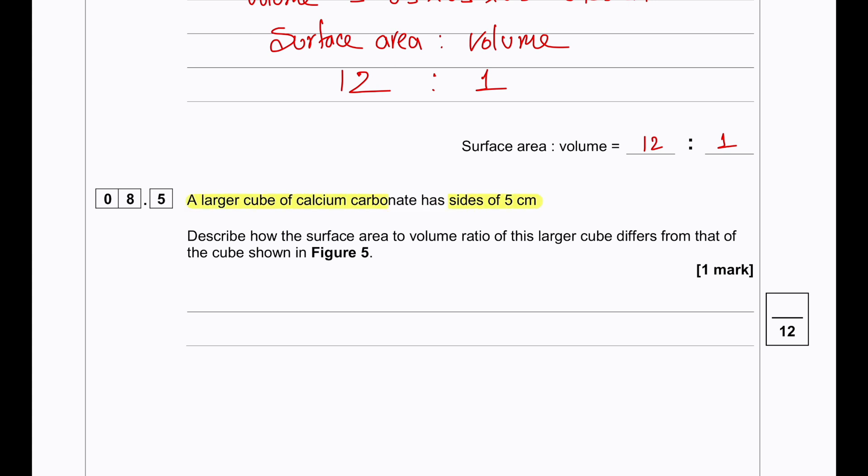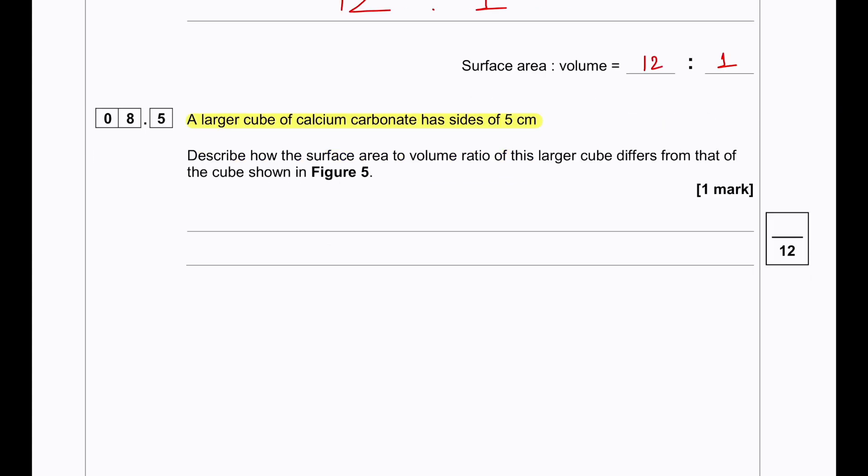A larger cube of calcium carbonate has sides of 5 cm. Describe how the surface area to volume ratio of this larger cube differs from that of the cube shown in figure 5. It has a side of 5 cm. The surface area to volume ratio decreases by a factor of 10.